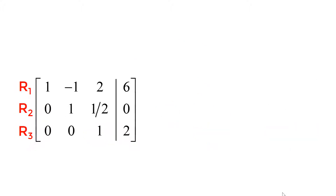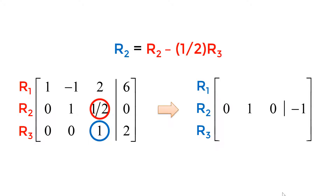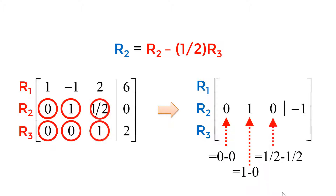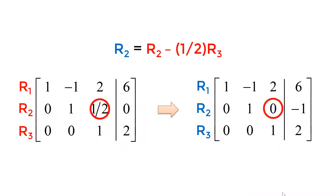Next step is to reduce my one-half to 0. I will use 1 in the third row, third column as a pivot point. Since I have one-half, I will multiply one-half on R3 and subtract from the second row element by element. My 0 comes from 0 minus 0, my 1 comes from 1 minus 0, my 0 comes from one-half minus one-half, and my minus 1 comes from 0 minus 1. You successfully made 0 in the second row, third column.